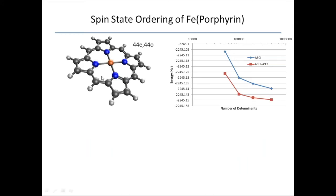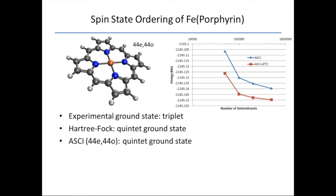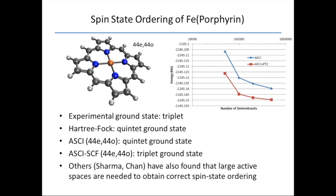Here's another example, iron porphyrin. This is with a 44 electron in 44 orbital active space. You can see here's the ASCI energy and here's the ASCI plus PT2 energy. The PT2 energy cleans things up slightly. Experimentally, this molecule has a triplet ground state. But if you ask Hartree-Fock, it says it has a quintet ground state. Even if you ask ASCI with 44 electrons and 44 orbitals, it'll say quintet. But if you actually do ASCIISCF and optimize your orbitals with this active space, you actually do recover a triplet ground state for this molecule. Other people have also found that you really need large active spaces to correctly obtain the spin state ordering in this complex.